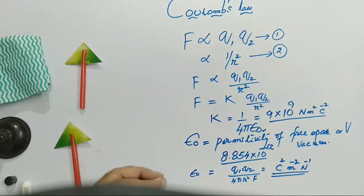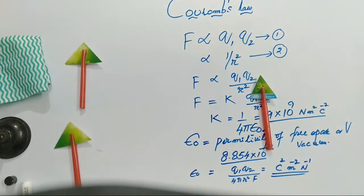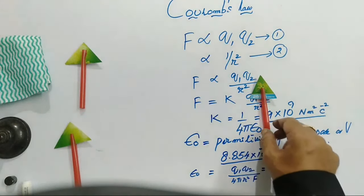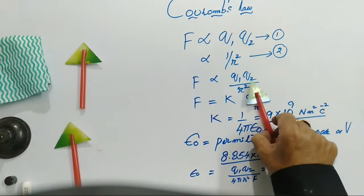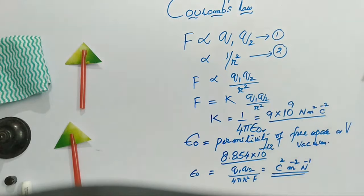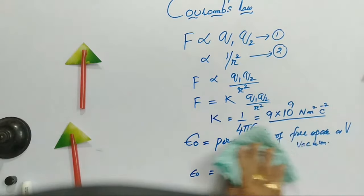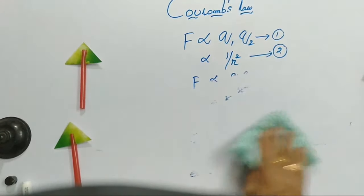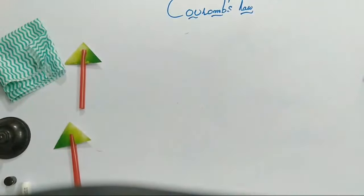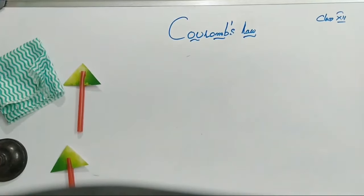Here we have not talked about direction. We know that force is a vector, and whenever we talk about a vector, we have to describe it completely along with its direction and magnitude. We just talked about the magnitude; now we have to talk about direction. Before writing the vector form, let us compare the known force — gravitational force — and then the electrostatic force we just defined.